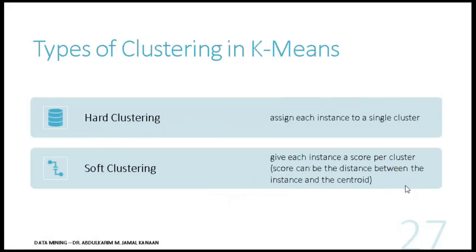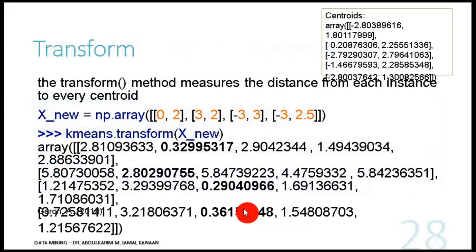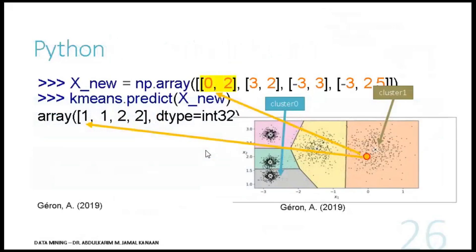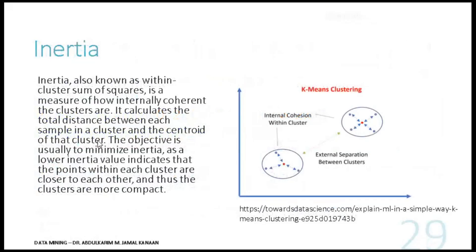In hard clustering, we just need the final answer — which cluster ID each data point is assigned to. In soft clustering, we call transform, which gives the distance from the data point to each centroid. For the first point [0, 2]: distance to centroid 0 is 2.81, to centroid 1 is 0.32, to centroid 2 is 2.9, centroid 3 is 1.4, centroid 4 is 2.8. The smallest value is 0.32 at index 1, so hard clustering assigns it to cluster ID 1.